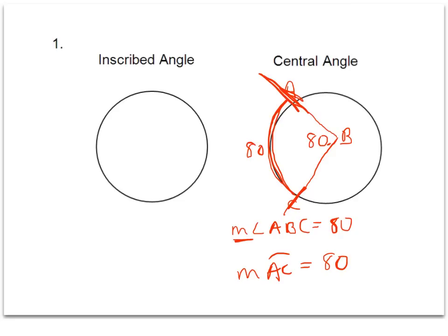Now an inscribed angle is different because the vertex isn't the center, but the vertex will be right on the circle, and the sides will be chords of the circle. So if we create an inscribed angle ABC, it will look like this. The key thing being that vertex is going to be on the circle instead of the midpoint of the circle.